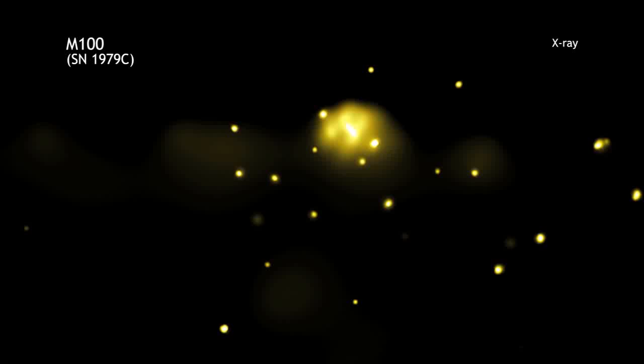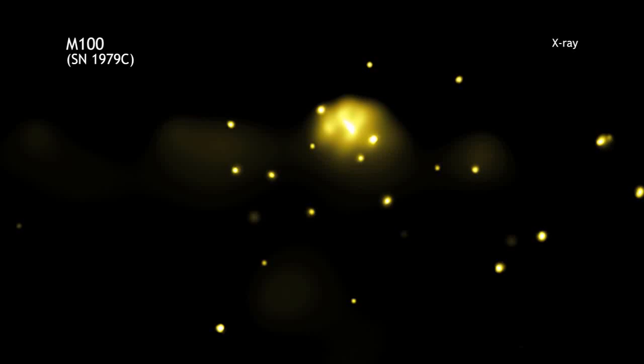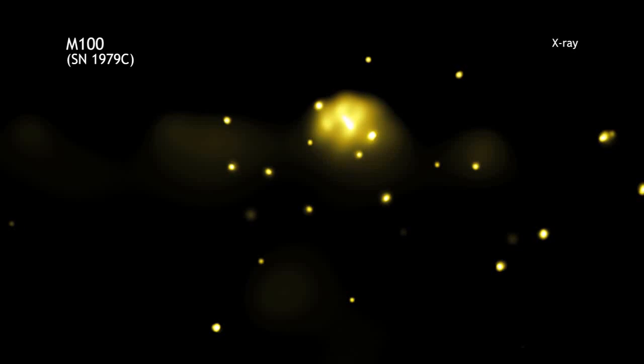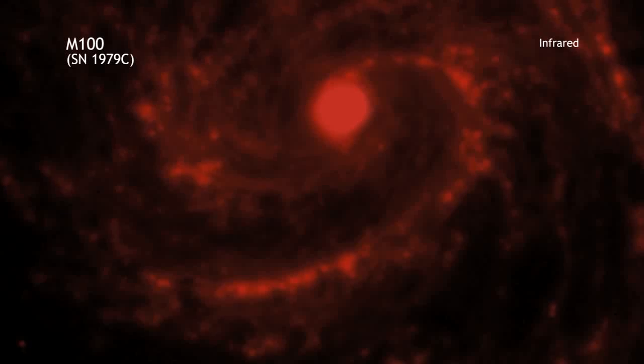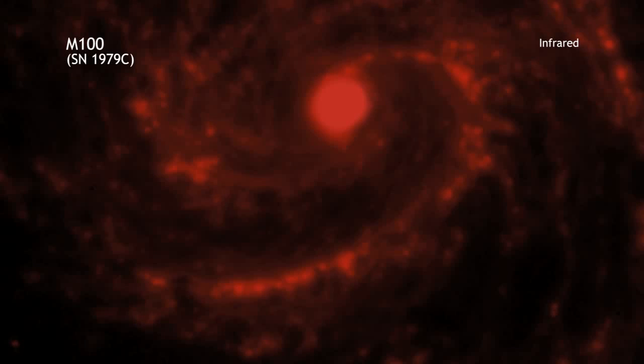What we interpreted this as was the formation of a black hole in the center of the supernova. If this is the case then this would be evidence for the youngest and the nearest newly formed black hole known to date.